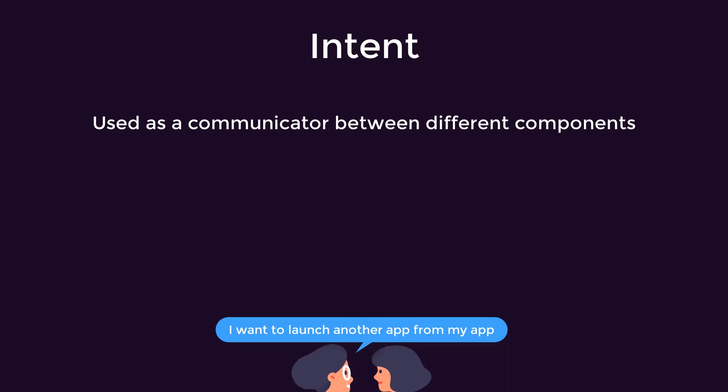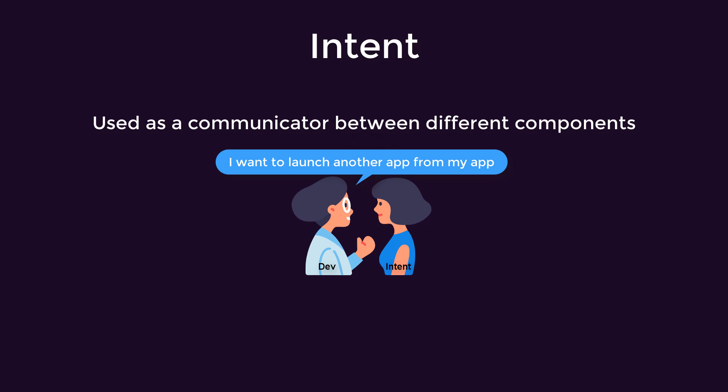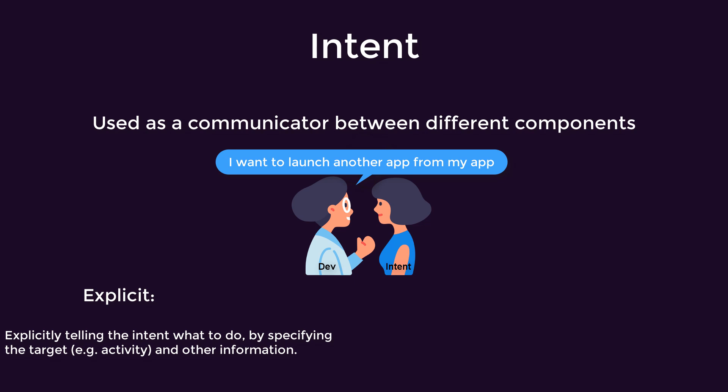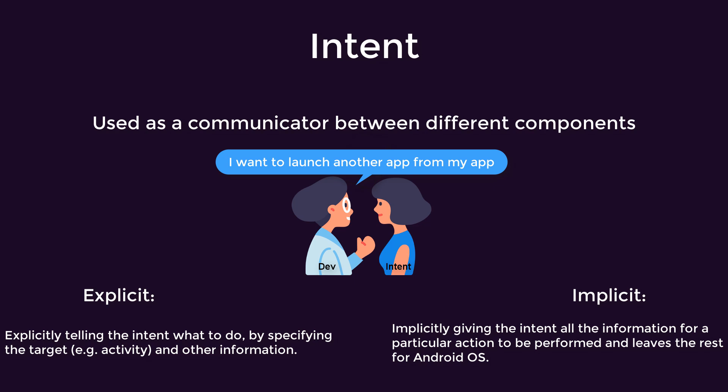You can also use the intent to represent your intention to perform a certain action on your data. Generally, the intent is made of two types, and so far we have been using only one — the explicit intent. Explicit intents are used to start a specific activity within the same application or another application by specifying the package name of the target application and the target activity, like a second or third activity.